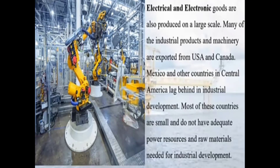Now let us look into electrical and electronic goods. The USA is the largest producer of electrical and electronic goods, produced on a large scale. Many industrial products and machinery are exported from USA and Canada. Mexico and other countries in Central America lag behind in industrial development, as most of these countries are small and do not have adequate power resources and raw materials needed for industrial development.